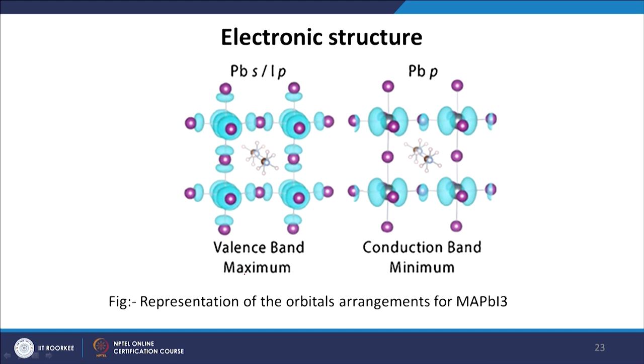As mentioned, this perovskite material, only within a few years of research starting from an efficiency of 3.8 percent, has reached today 22 percent and that number is increasing every day. This material has been used not only for solar cells but also for light emitting diodes, detectors, and lasers. In our course, however, we will learn about perovskite-based solar cells.